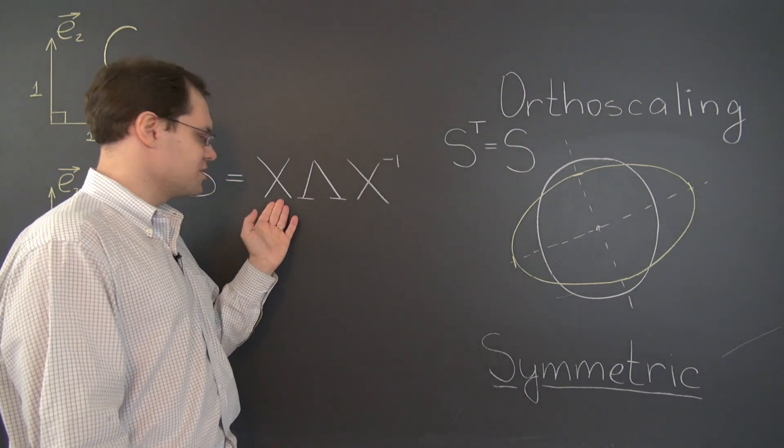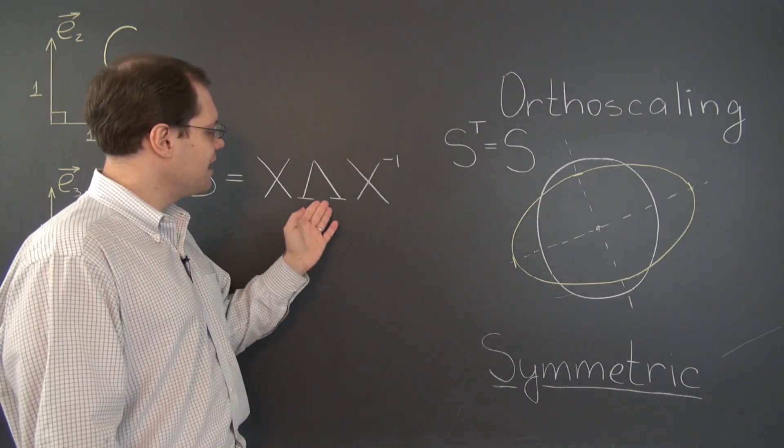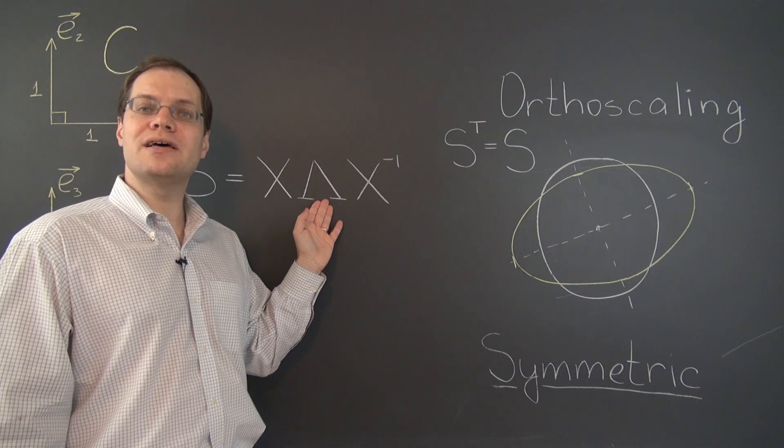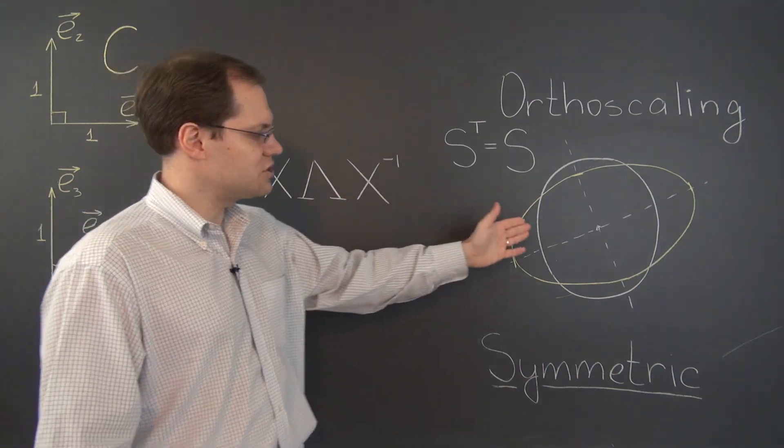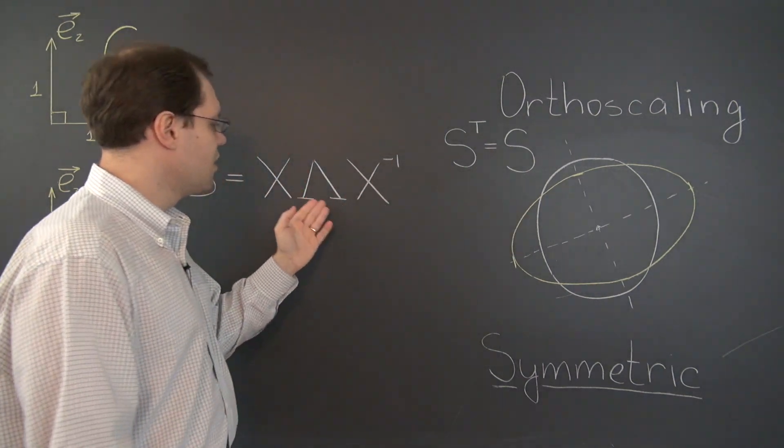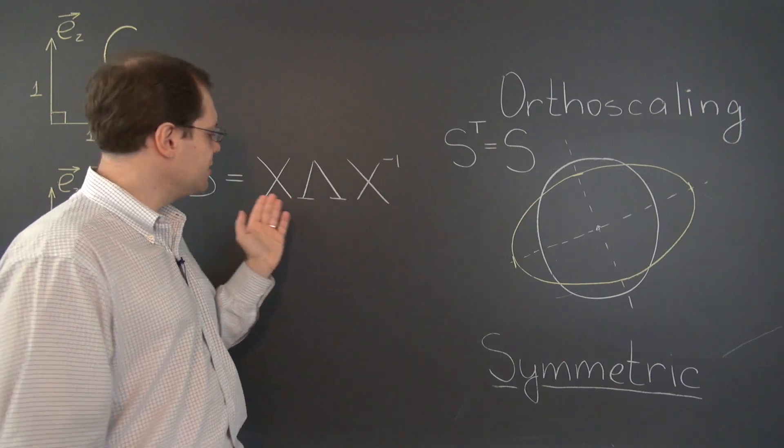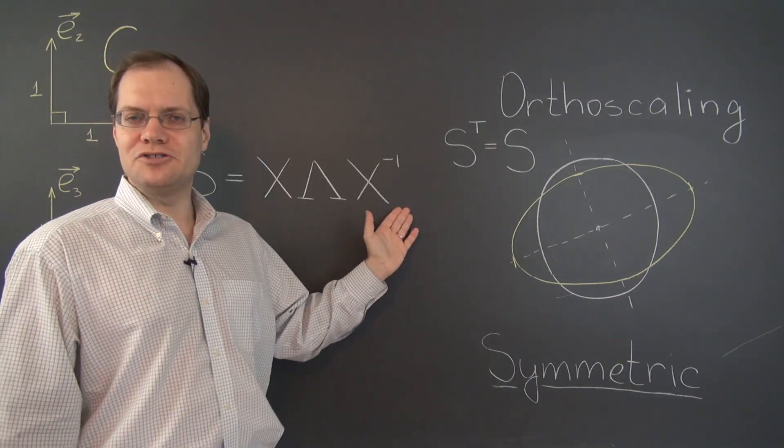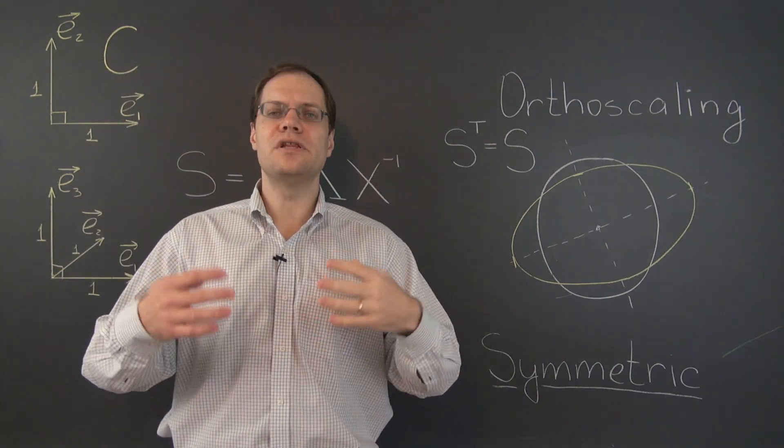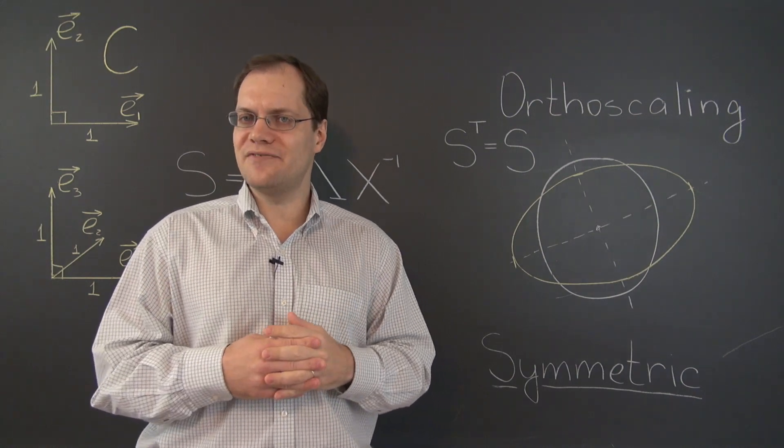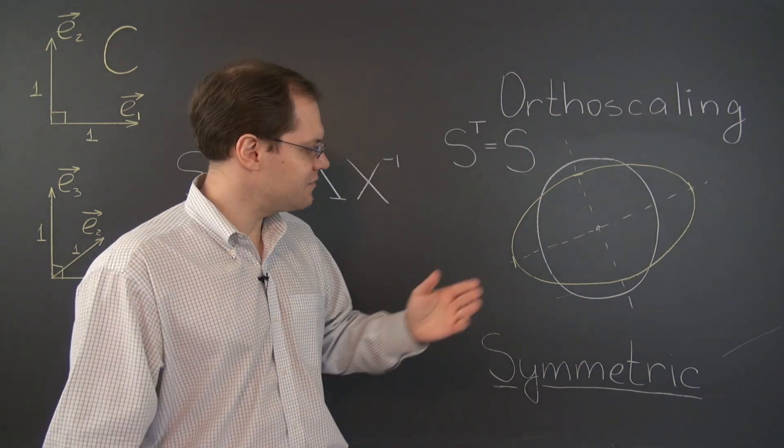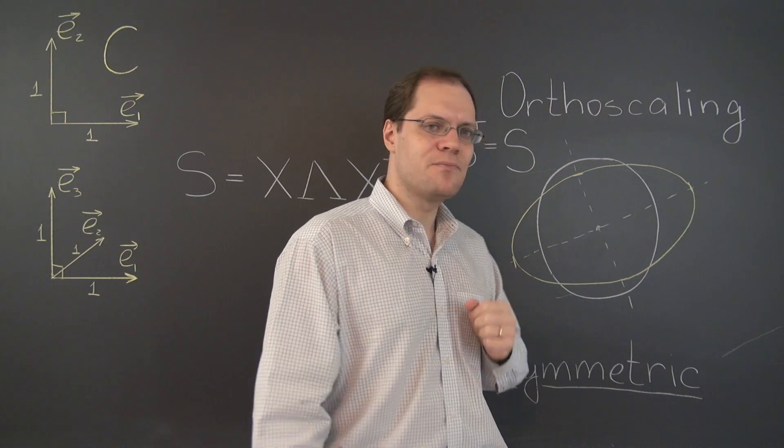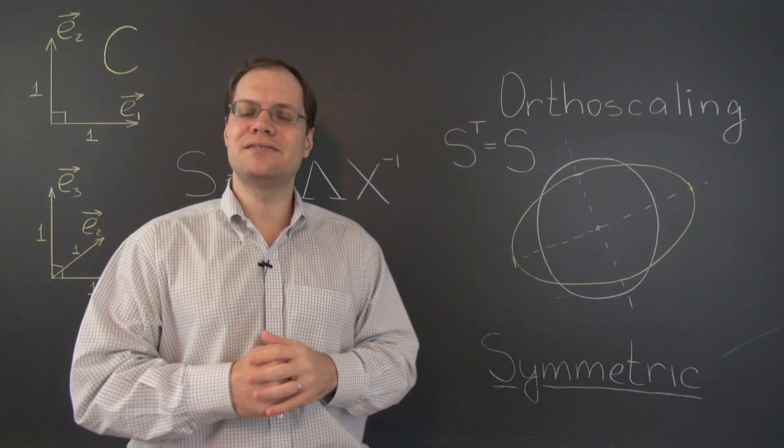X inverse is of course the inverse of this matrix and lambda is a diagonal matrix with the eigenvalues of the transformation or the matrix on the diagonal. Now, this holds for any matrix or linear transformation with a full set of eigenvalues and eigenvectors. We have not taken advantage of this orthogonality or of the fact that the basis is Cartesian.